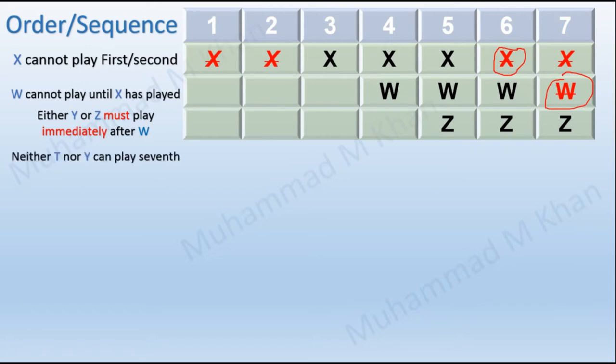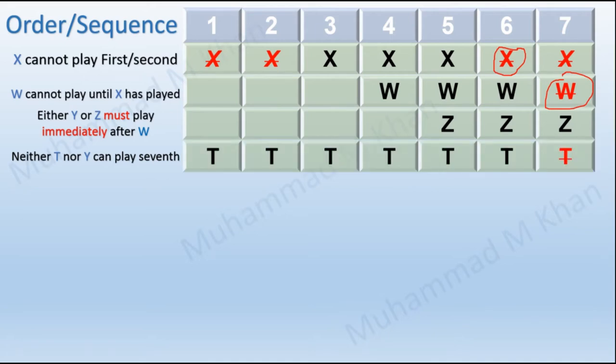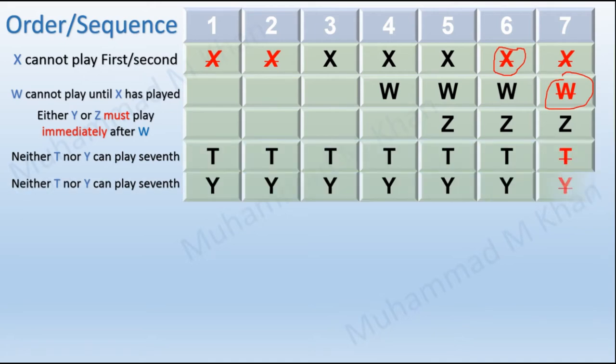The next condition is that neither T nor Y can play seventh — so we make position 7 unavailable for both T and Y. The last condition is that V must play immediately after or before U plays.